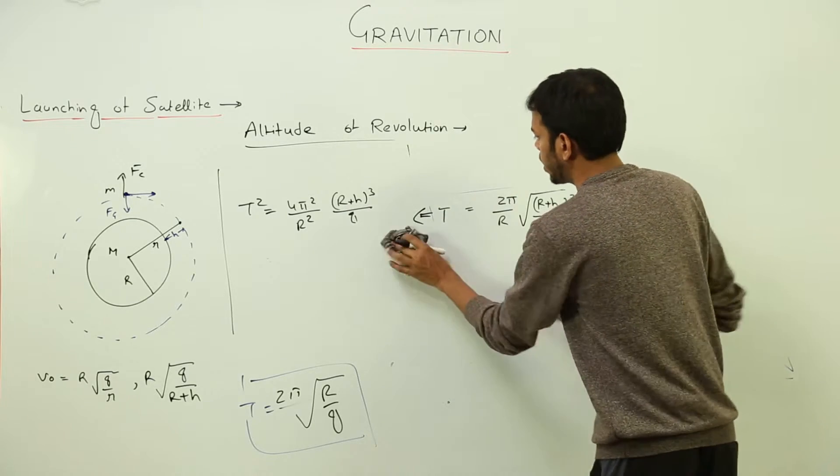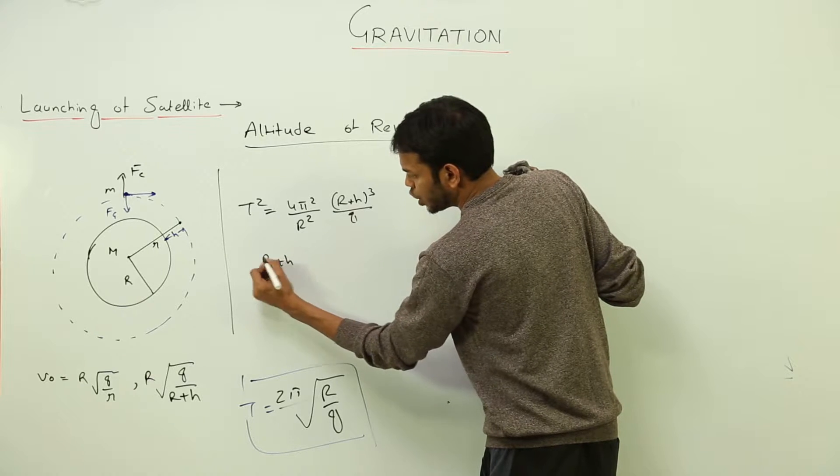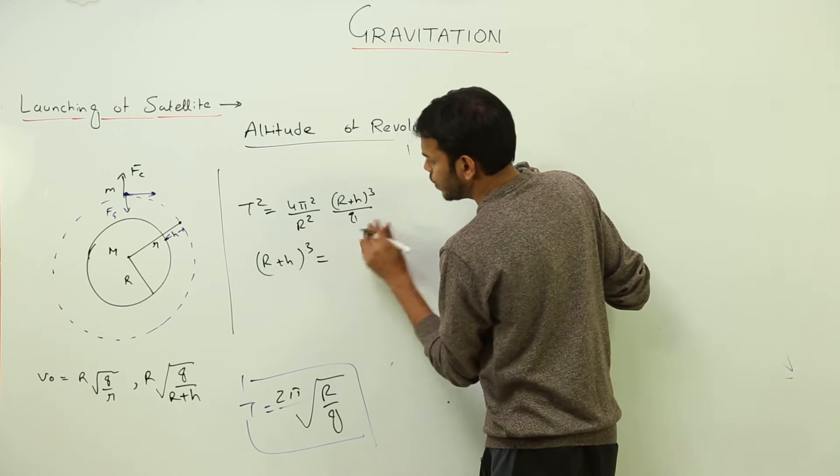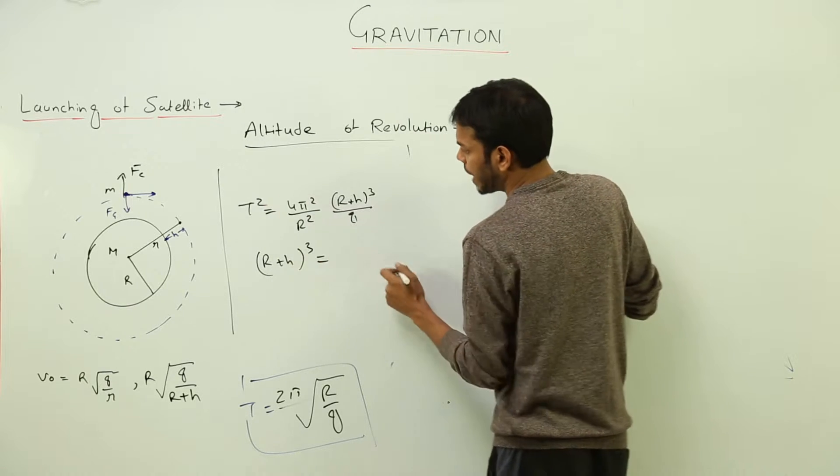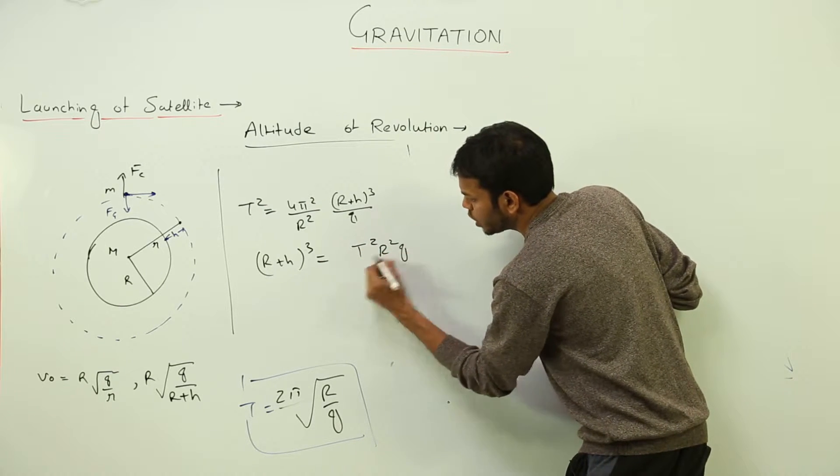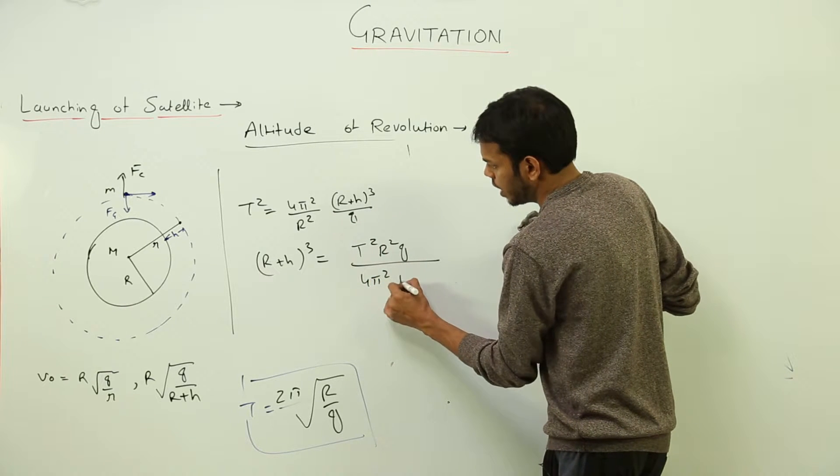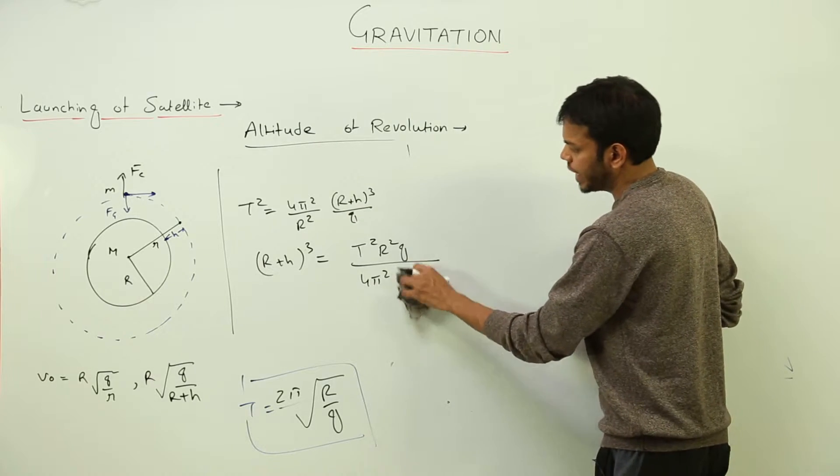So r plus h, now I don't want this equation anymore. So r plus h whole cube is equal to, these gets multiplied with t square, t square times r square into g upon 4 pi square, right?